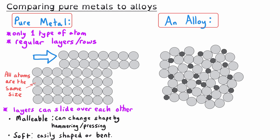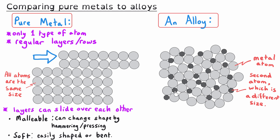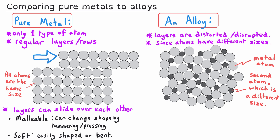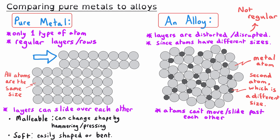That's also what makes pure metals very soft. In contrast, for an alloy, you've got your original metal but also at least one other type of atom, and crucially this second atom is a different size — not always smaller, sometimes it can be a larger atom. As a result of atoms of different sizes being present, the layered structure has been distorted or disrupted — it's certainly no longer regular. So the atoms don't slide past each other as easily as in the pure metal, meaning they won't be so malleable. In fact, they will be much harder and less easily shaped.